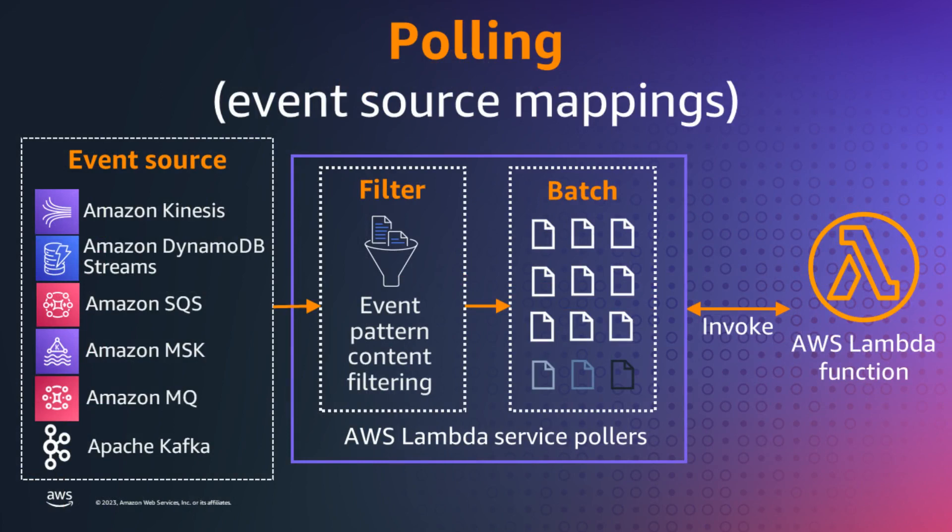Lambda also supports another invoke model, which is polling. An event source mapping is a Lambda resource that reads items in a source batch from a stream such as Kinesis or DynamoDB, or from a queue like SQS. A producer application would have placed items on the queue or stream asynchronously. Lambda manages the pollers as part of the service and reads the messages. It can optionally filter and batch them, and then sends them onto your function synchronously for processing.